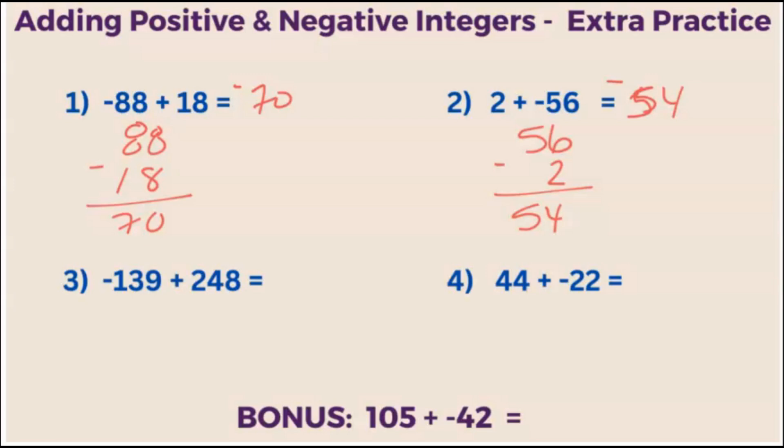What about negative 139 plus 248? Well, let's subtract. 248 minus 139. We're going to borrow from here. Make that an 18. We get 109.